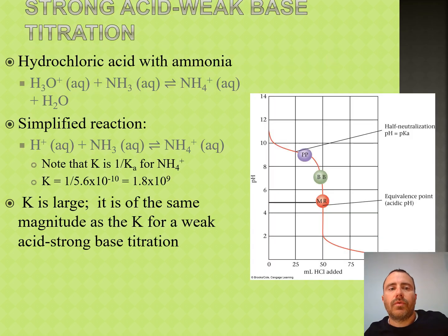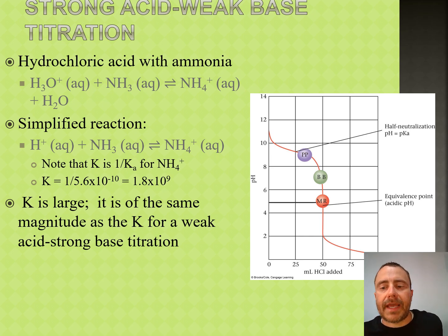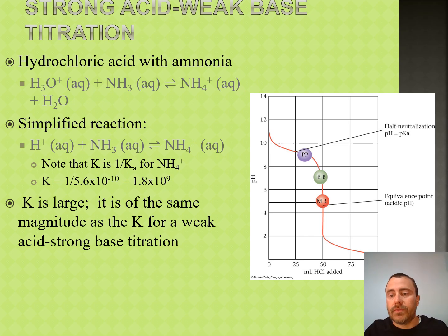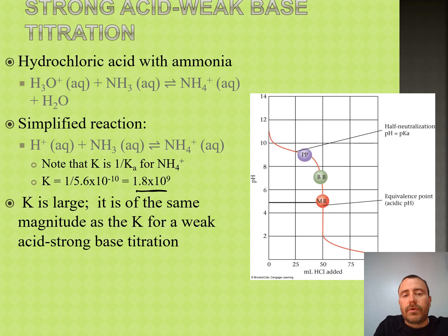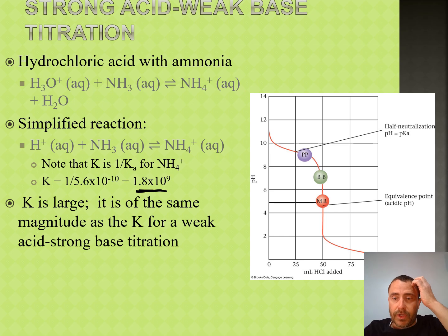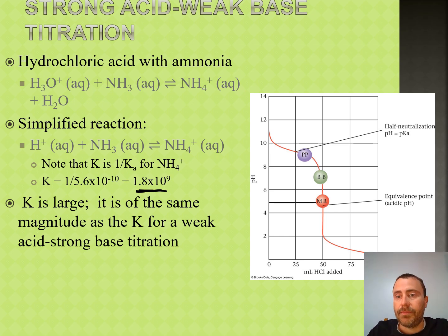For our strong acid-weak base titration example, notice that I am showing hydrochloric acid reacting with ammonia, and we're going to produce our ammonium cation and some water. When we look at this, it has a relatively large value for our K, meaning that this reaction, for the most part, goes almost to completion.